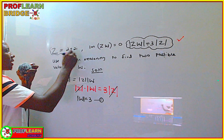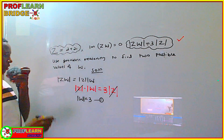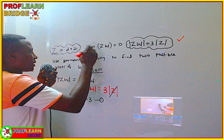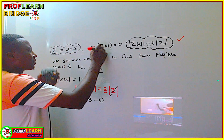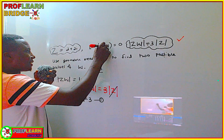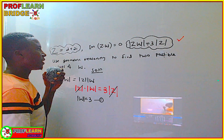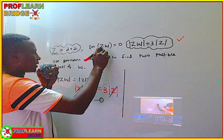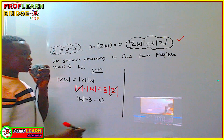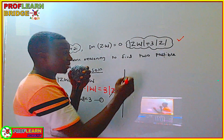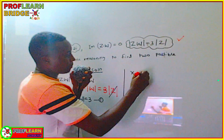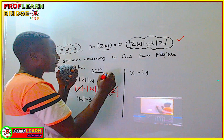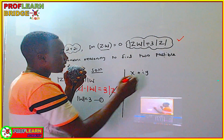We are told that the imaginary part of z times w is 0. Since a complex number is written as x plus iy, when the imaginary part of zw is 0 it means that zw is a purely real number.